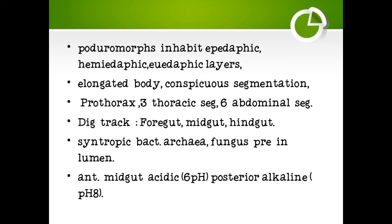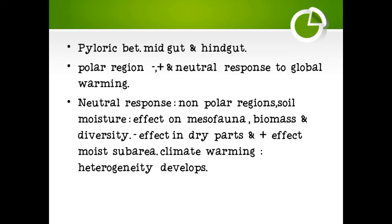Collembola have an elongated body with conspicuous segmentation: prothorax, three thoracic segments, and six abdominal segments. The digestive tract includes foregut, midgut, and hindgut. Symbiotic bacteria, archaea, and fungi are present in the gut lumen. The anterior midgut is acidic (pH 5–6) and the posterior is alkaline (pH 8).